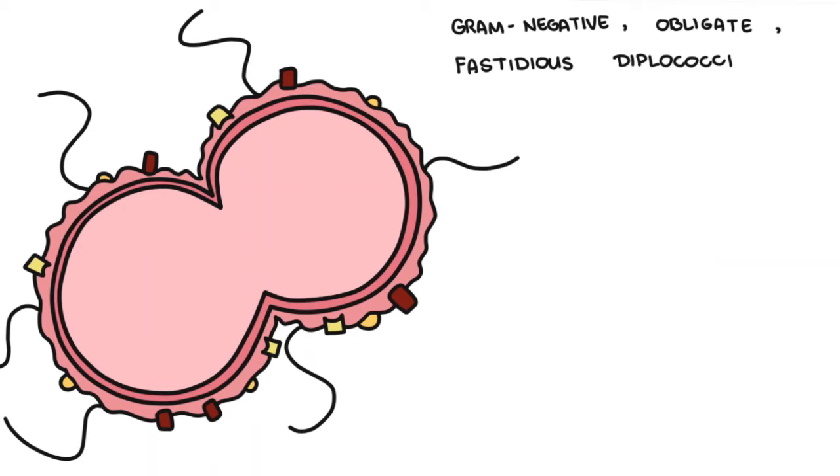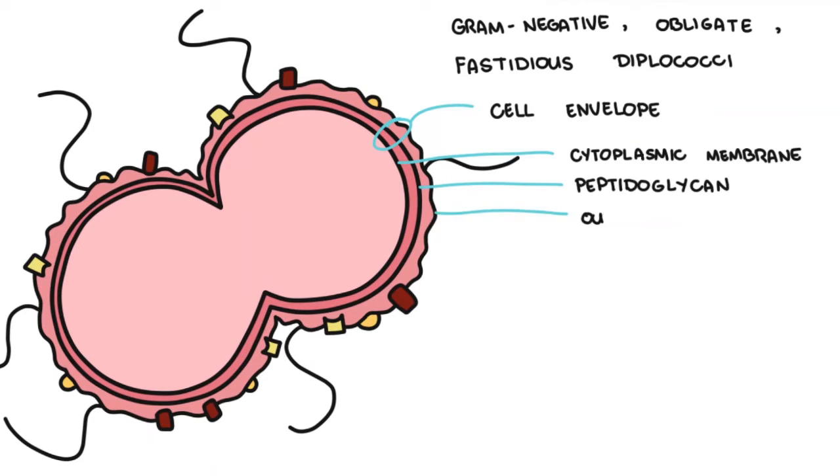Like all gram-negative bacteria, Neisseria gonorrhea possesses a cell envelope, which is composed of an inner cytoplasmic membrane, a middle layer of peptidoglycan, and an outer membrane.